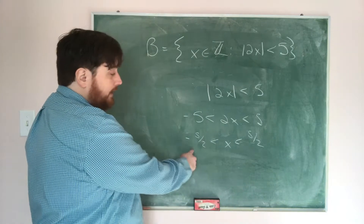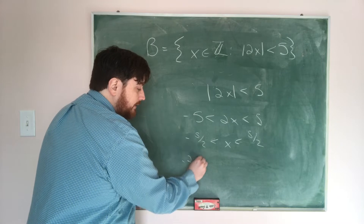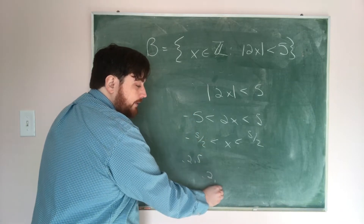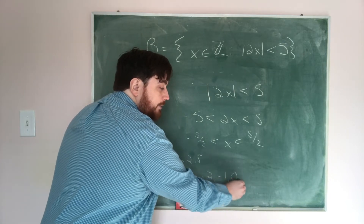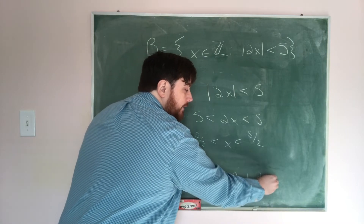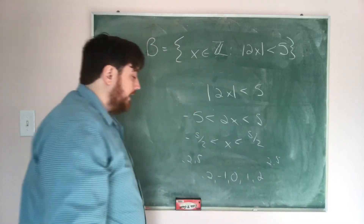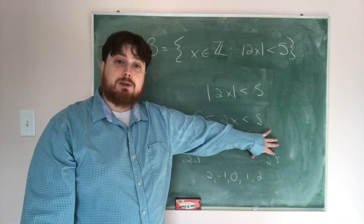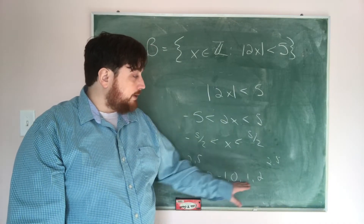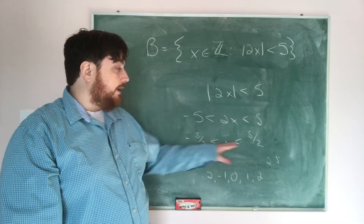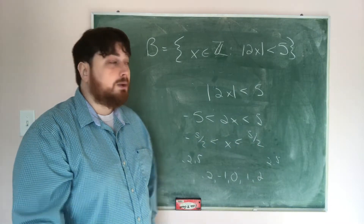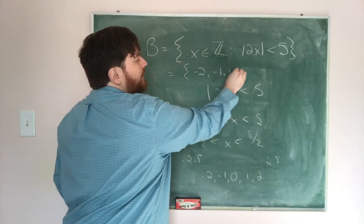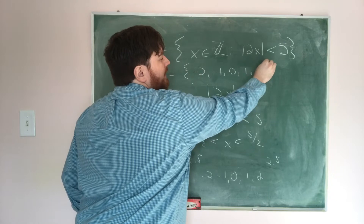Starting at negative 2.5, the next integer is negative 2, then negative 1, followed by 0, 1, and 2, and then we reach 2.5. We don't want to include negative 3 or 3, as they fall outside the range. These integers are precisely the ones between negative 5 halves and 5 halves, so set B equals {-2, -1, 0, 1, 2}.